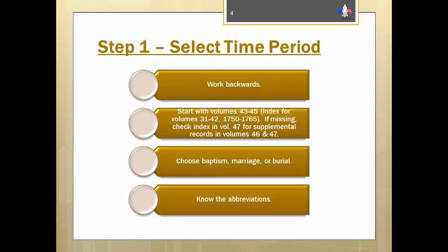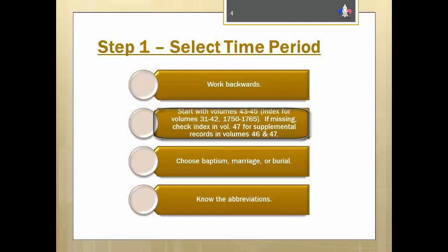As we know, in genealogy we always work backwards from the known to the unknown, so you do the same thing with these volumes. First, you have to have researched the family far enough back in time to have reached the 1765 cutoff date. Then you have two choices. If you know the parish the record is located in, you can go directly to the index at the end of that parish's records. Or if you know you're looking for an event that took place between 1750 and 1765, you can search the index in volumes 43 to 45.